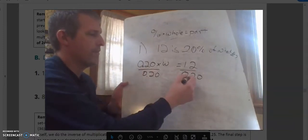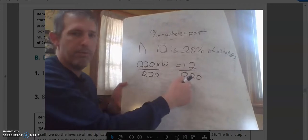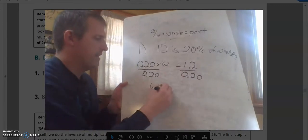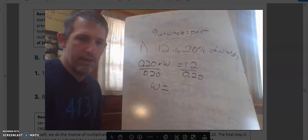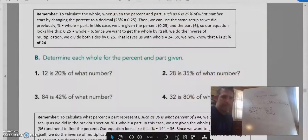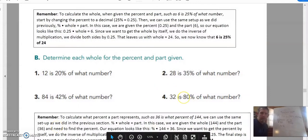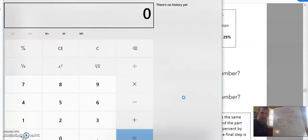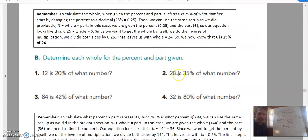We're going to divide both sides by 0.20. 12 divided by 0.20 is, wait for it, wait for it, 12 divided by 0.20 is 60. So my whole is 60. That would be my answer there.